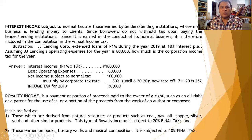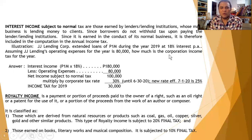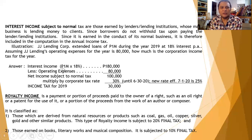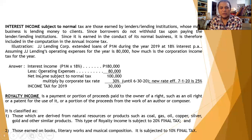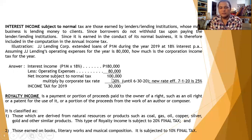Example: JJ Lending Corporation extended loans of 1 million pesos during 2019, with interest at 18% per annum. Assuming JJ Lending's operating expenses for the year are 80,000 pesos, how much is the corporation income tax? The interest income is 1 million times 18% equals 180,000 pesos. Minus operating expenses of 80,000 pesos, the net income subject to normal tax is 100,000 pesos. Multiplied by the corporate tax rate of 30%, the income tax for 2019 is 30,000 pesos.